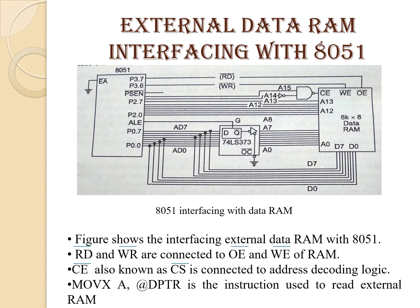External data RAM interfacing with 8051: the figure shows the interfacing of external data RAM. RD bar and WR bar are connected to OE bar and WE bar of the RAM respectively. RD bar is the read pin and WR bar is the write pin. OE bar is the output enable for reading. CE bar, also known as CS bar (chip select), is connected to address decoding logic. The instruction MOVX A, @DPTR is used to read external RAM.